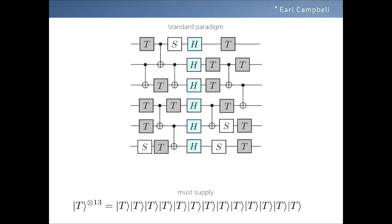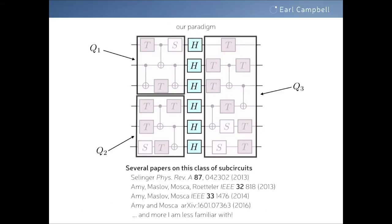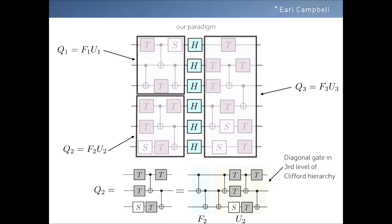Let's take some generic circuit. In the standard paradigm, if there are 13 T gates, somewhere in your computer you have a factory that makes 13 T states. Our paradigm is slightly different: we break circuits up into sub-circuits that don't have Hadamard gates. Any algorithm can be broken up into bits that have only Hadamards and bits that don't. This particular gate set — T plus S and controlled-NOT — has been studied extensively. Each sub-circuit Q can be broken up into a part F and a part U, where F is just made of controlled-NOT gates, and U has been arranged so there is no permutation of the computational basis.